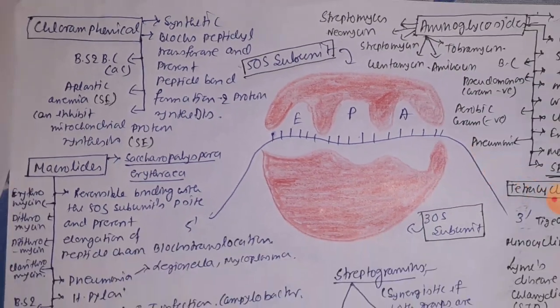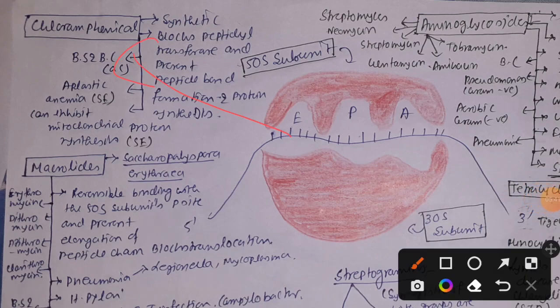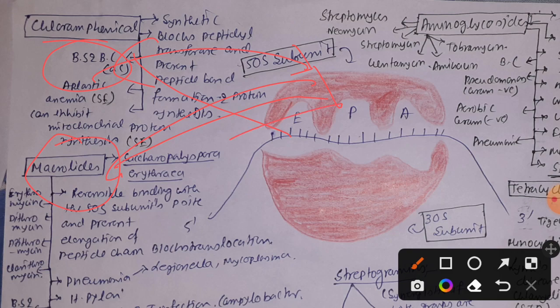To revise the 50S subunit inhibitors: chloramphenicol is synthetic, attacks the 50S subunit, inhibits peptidyl transferase, inhibits peptide bond formation, and is mainly bacteriostatic but can be bactericidal at higher concentrations. Side effects include aplastic anemia and inhibition of mitochondrial protein synthesis. Macrolides, isolated from Saccharopolyspora erythraea, bind to the P-site of the 50S subunit, inhibit peptide chain elongation, and block translocation.